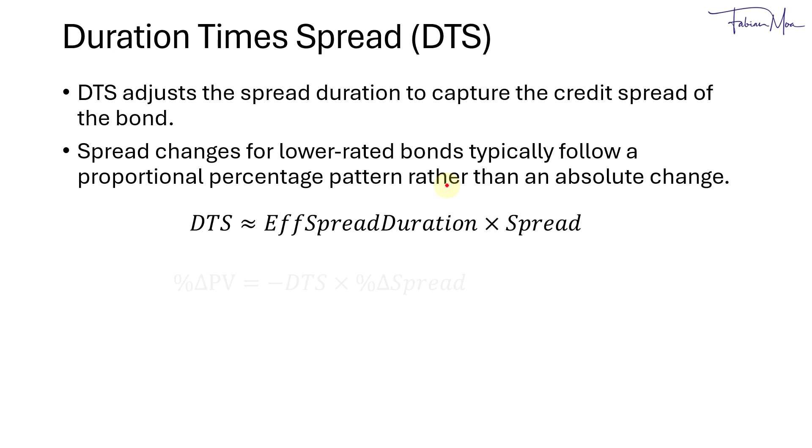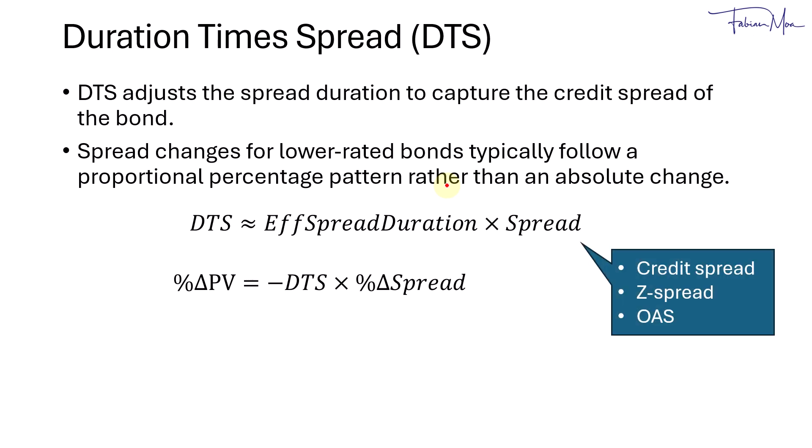Using this, we can calculate the percentage change in present value as the negative product of DTS and the percentage change in the spread. Key types of spreads relevant here include the credit spread, Z-spread, and option-adjusted spread, or OAS.